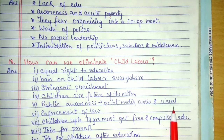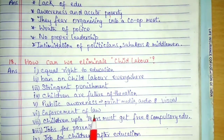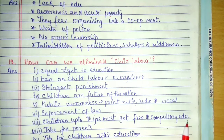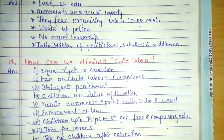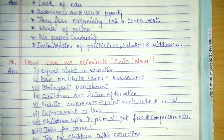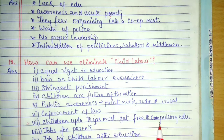Public awareness through print media, audio, and visual media — all means should be used to make people aware. Enforcement of law: there should be stringent punishment if somebody goes against child labor laws. Children up to 14 years of age must get free and compulsory education. The government is doing well right now — free and compulsory education exists, children are getting midday meals, and they are receiving various incentives from the government, which will encourage them to learn more.